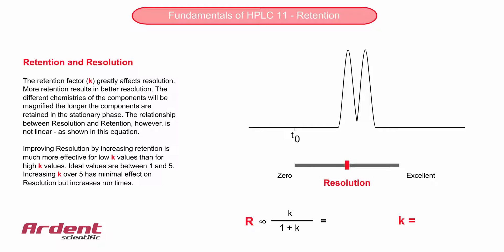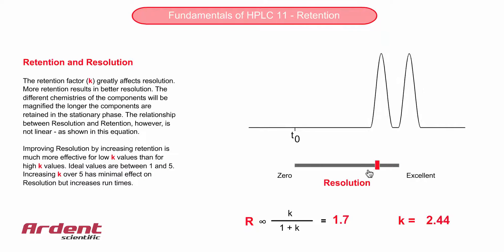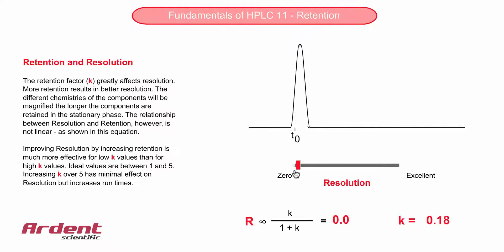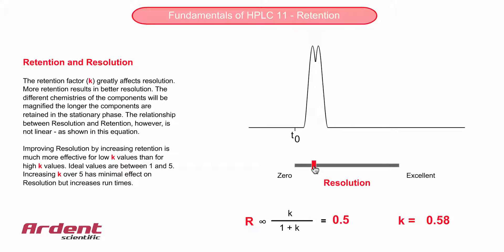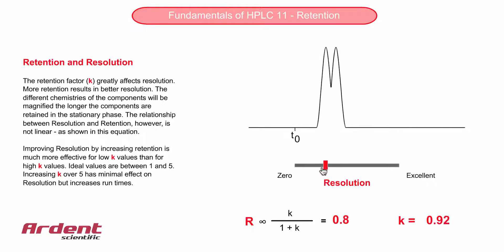Let's get back to resolution and see how retention affects the resolution of two peaks. You can see from the equation displayed that a very low retention factor results in very poor resolution. This is nicely demonstrated by using the slider bar. The retention factor displayed is the average of the two peaks, and changing the retention factor makes a much bigger difference to resolution at low retention factor values than at higher retention factor values.